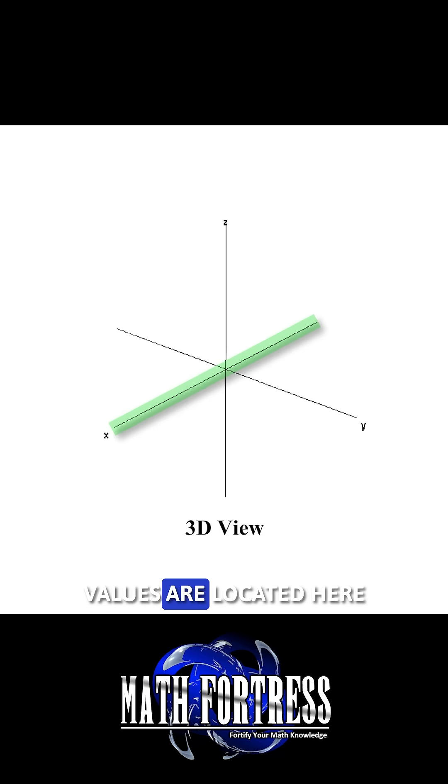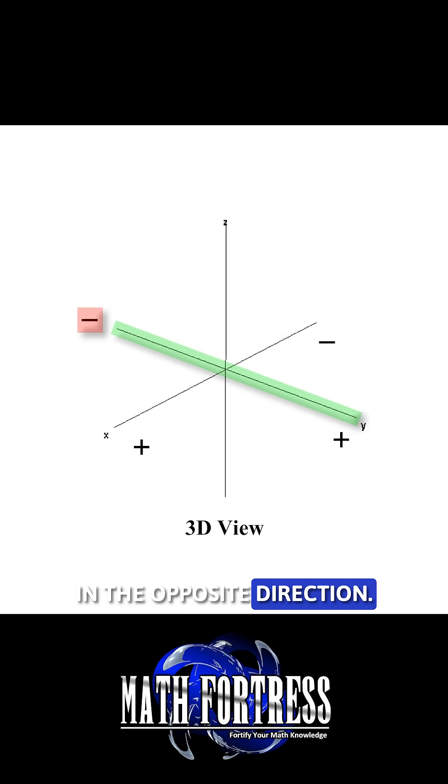On the x-axis, the positive values are located here and the negative values are located on the opposite direction. On the y-axis, the positive values are located here and the negative values in the opposite direction. And finally on the z-axis, the positive values are located here and negative values in the opposite direction.